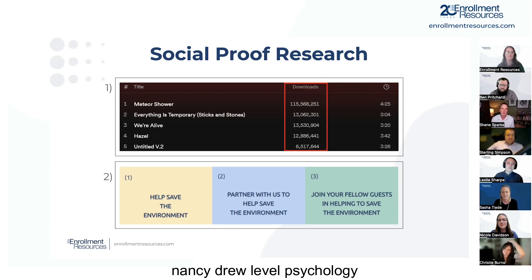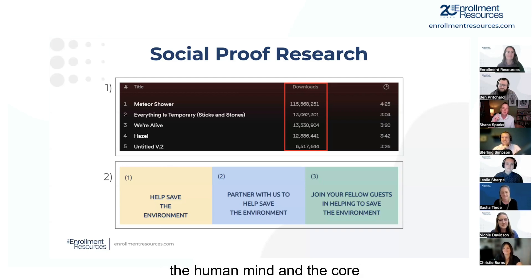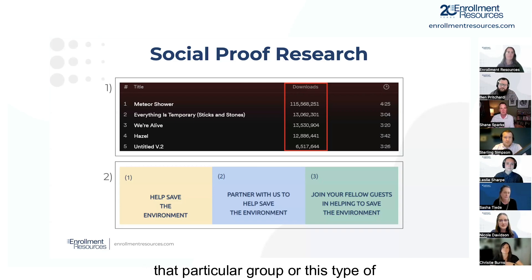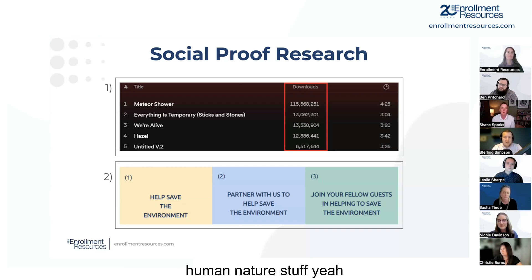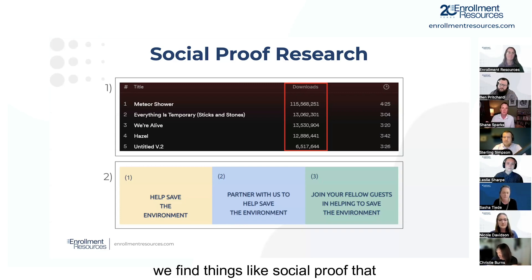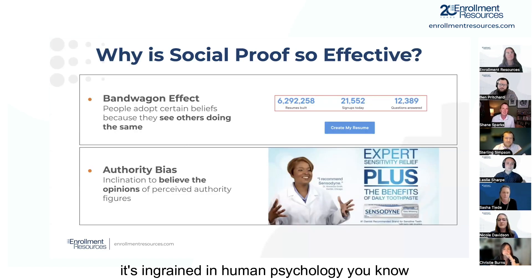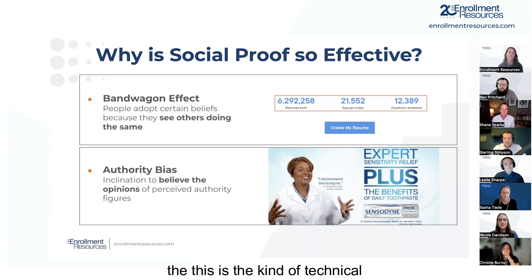We can think about marketing as almost Nancy Drew-level psychology — we're trying to uncover the quirks of human behavior. Because these are big sample sizes in the social science research, you can't attribute results to just a particular group or type of person in a particular area. This is human nature — we're psychologically wired in similar ways. Social proof is a true description of something that's kind of universal, ingrained in human psychology.